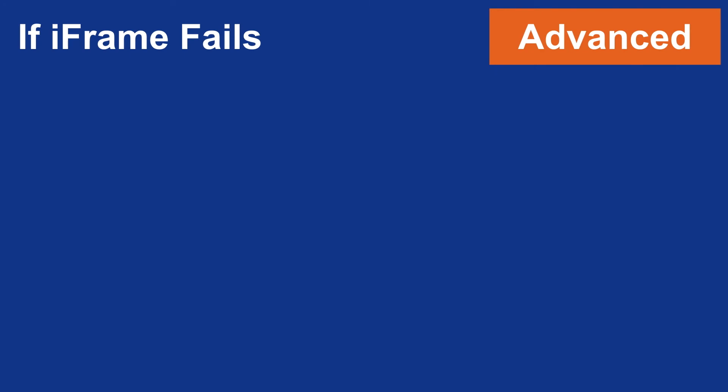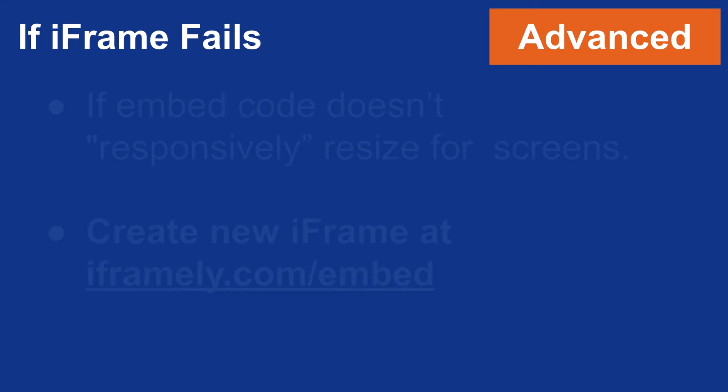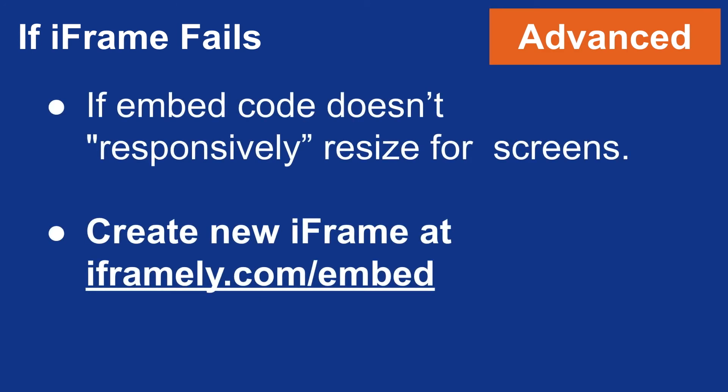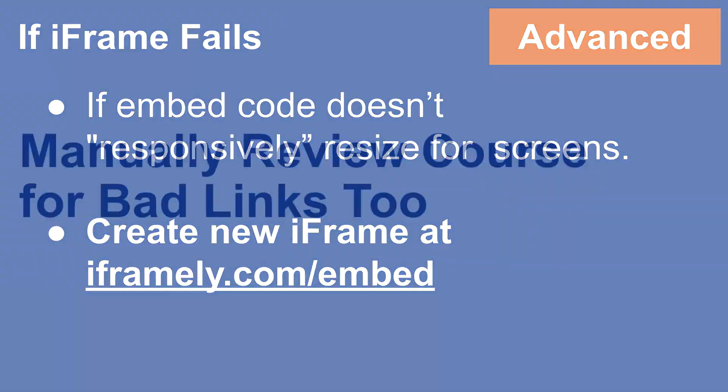If your iFrame just does not work — meaning it's not allowing the video to be resized on a cell phone or tablet — you can actually create a new iFrame. There's a website called iframely.com where you can create a new embed code so that your video, or whatever you're putting into the class, will resize for whatever type of screen is being used.